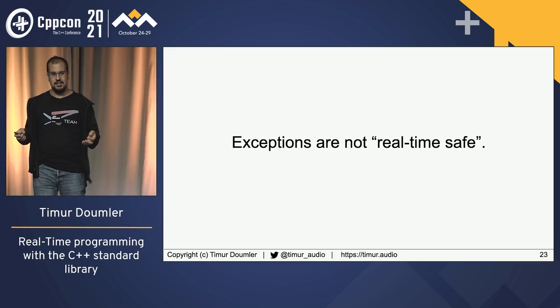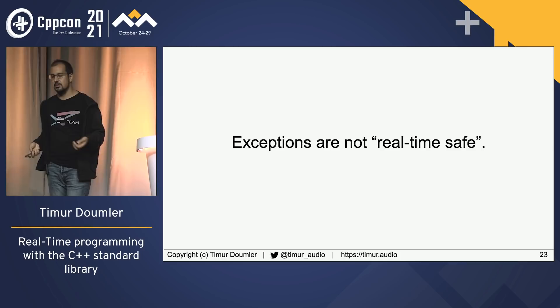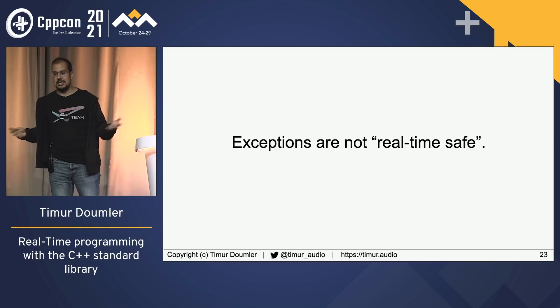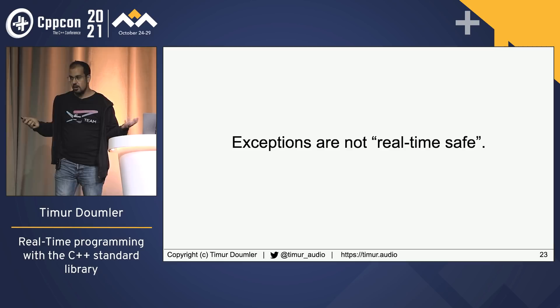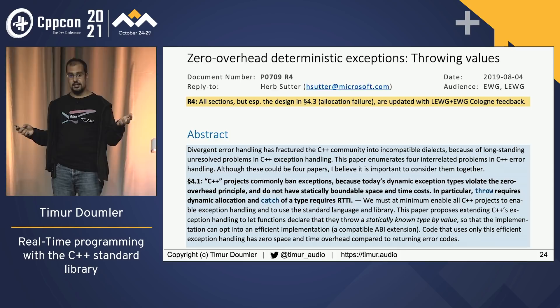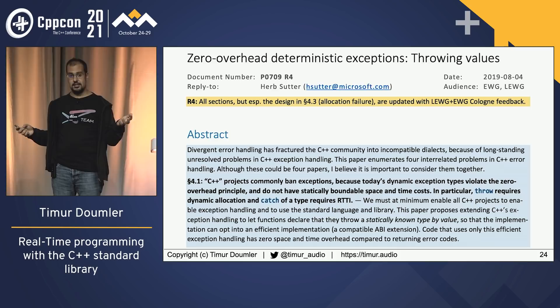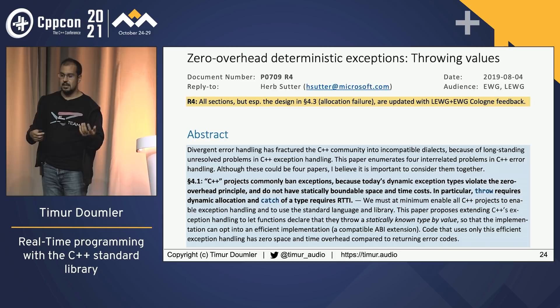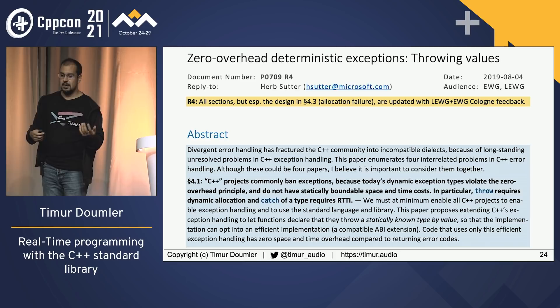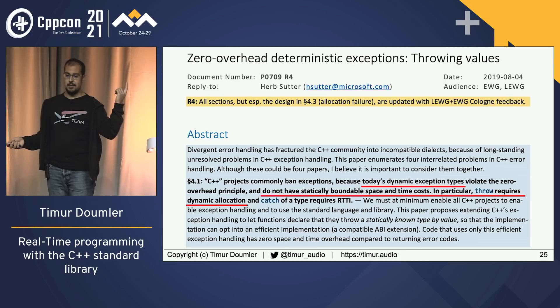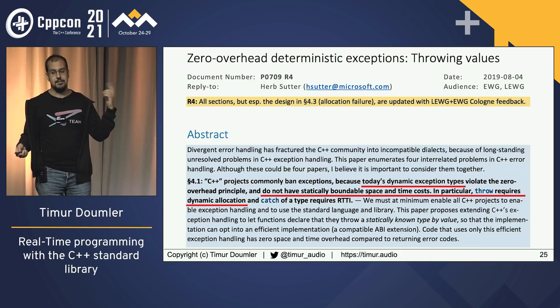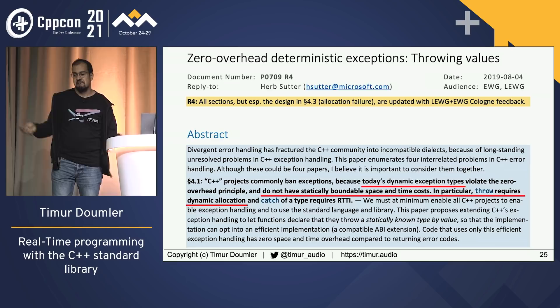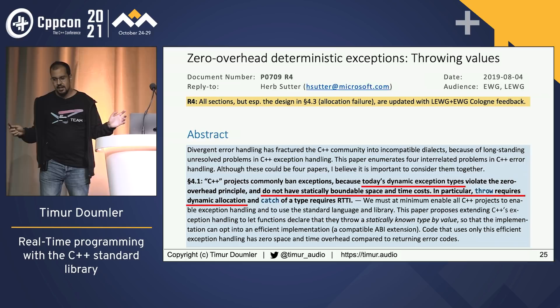The first feature I want to talk about is exceptions — a core language feature, but a lot of the standard library uses them. Exceptions are not real-time safe. There has been work on this, notably Herb Sutter's proposal for zero-overhead deterministic exceptions presented at CppCon two years ago. But the important sentence from that paper's abstract about where we live today is: 'Today's exceptions do not have statically boundable time costs; in particular, throw requires dynamic allocation' — at least on some systems. So you can basically stop thinking about exceptions at this point.